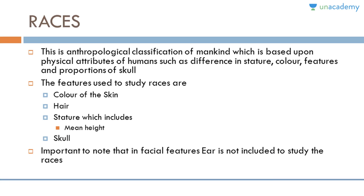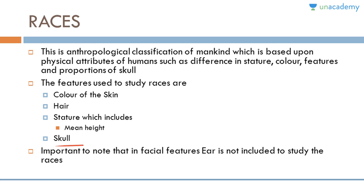Race is an anthropological classification of mankind based upon physical attributes such as difference in stature, color, features, and proportions of skull. The features used to study races include color of the skin, stature (mean height), skull, and facial features. It is important to note that the facial feature of the ear is not included in the study of races.